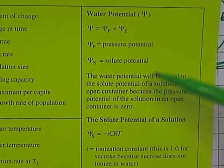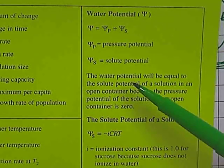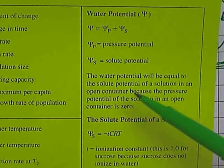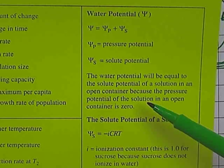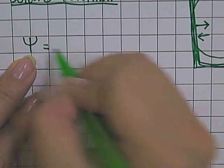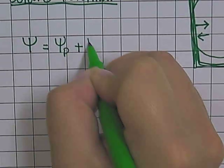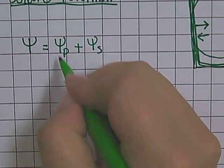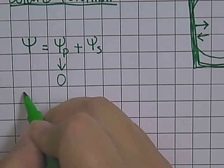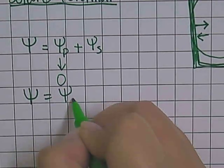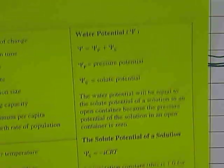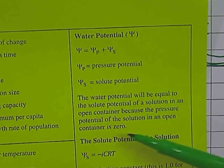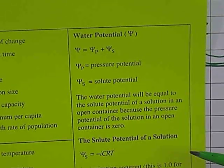Our water potential is equal to the pressure potential plus the solute potential. The formula sheet tells you that water potential equals the solute potential of a solution in an open container, because the pressure potential of an open container equals zero. Since our cells qualify as open containers, that means water potential equals pressure potential plus solute potential, but pressure potential is zero. Zero plus anything means you ignore that value, so water potential is directly equal to solute potential. That is on your formula sheet — you don't have to memorize it.